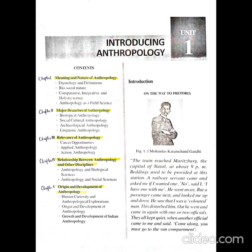Some famous definitions are also given in this chapter by A.L. Kroeber, Harkowitz, Kluckhohn, etc. According to Kroeber, Anthropology is the science of man. According to Harkowitz, Anthropology is the study of man and his work. According to Clyde Kluckhohn, out of all the sciences which study various aspects of man, Anthropology is the one which comes nearest to the total study of man, including the evolution of man. You should remember two or three definitions for your exam.